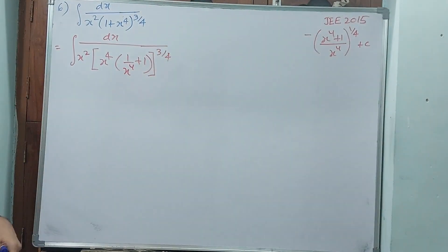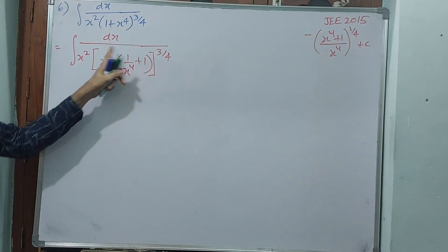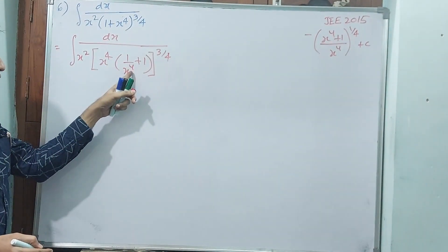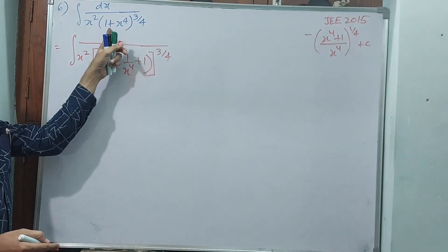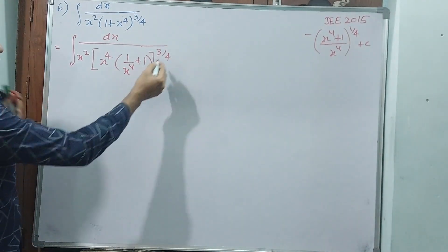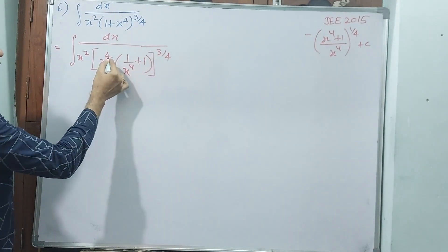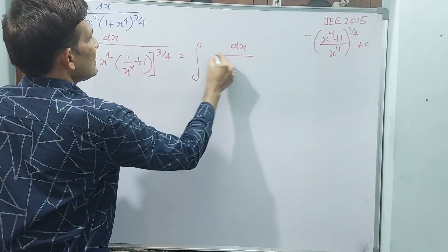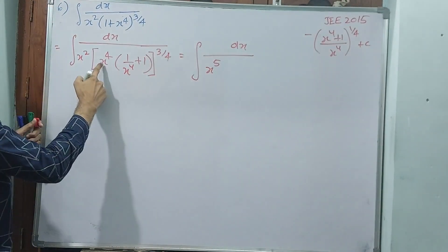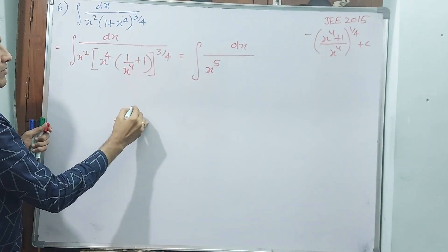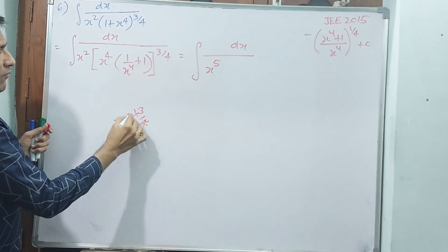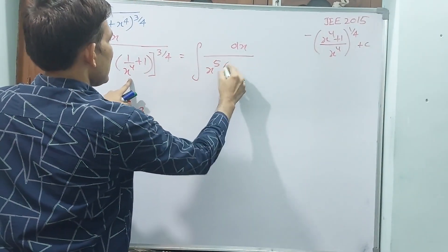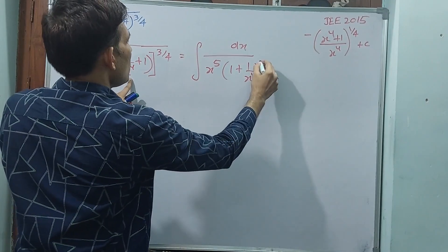Is it correct? See, whole to the power of 3 by 4 is the same — internally I have taken common. If you send x to the power of 4 inside: x to the power of 4 by x to the power of 4 is 1, plus x to the power of 4 gives 1 plus x to the power of 4. The x to the power of 4 raised to power 3 by 4 — the 4 will get cancelled, giving x cube. x cube into x squared is x to the power of 5. Again you write: 1 plus 1 by x to the power of 4, to the power of 3 by 4.